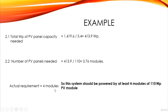Since 3.76 is not a whole number, we round up to the next integer, which is four modules. Four modules is the minimum required for our system. If we use more than four modules the system will perform better and battery life will be improved, but if we use fewer than four modules the system may not work during cloudy periods and battery life will be shortened. The system should be powered by at least four modules of a 110 watt peak PV module.